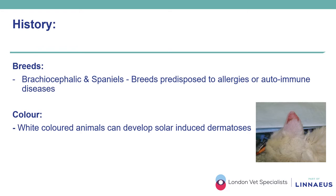Another important point includes colour, with white-coloured animals that can develop solar-induced dermatosis, as in this cat where the ear pinna, mostly on the tip and in its central part, is characterized by alopecia, erythema, margination, scaling and crusting — essentially consistent with actinic keratosis, a condition characterized histologically by dysplastic changes, which can further develop into neoplastic changes such as squamous cell carcinoma.